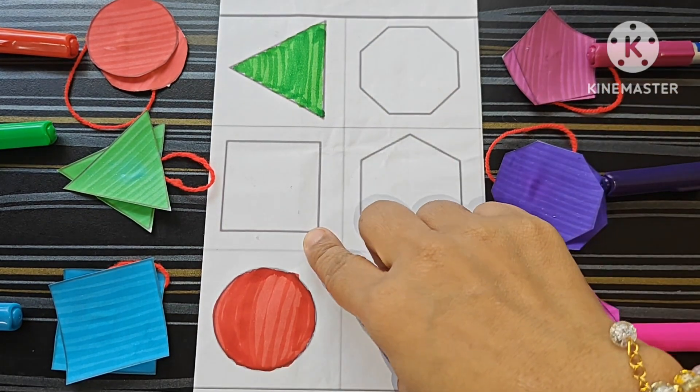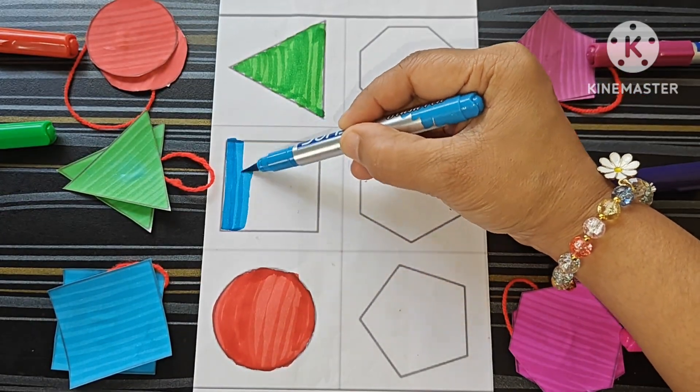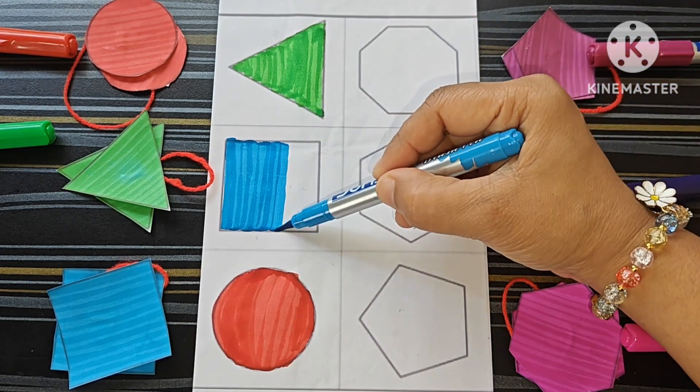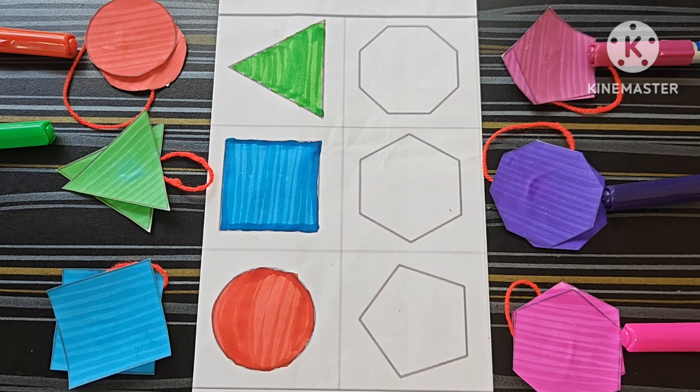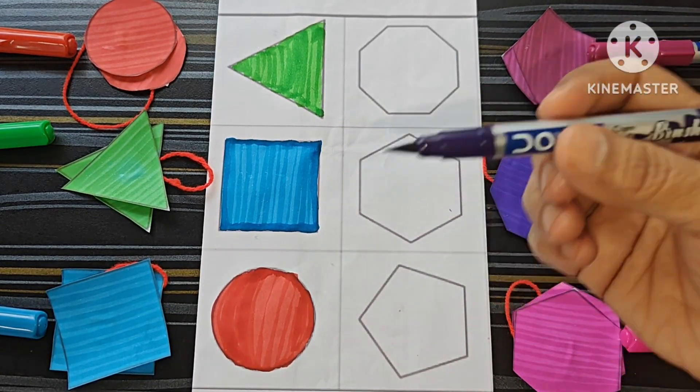This is square. Hexagon, and what is the color of hexagon? This purple color.